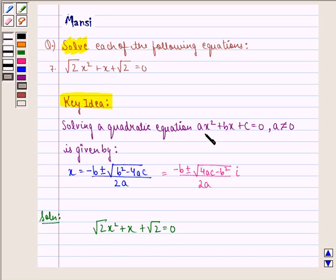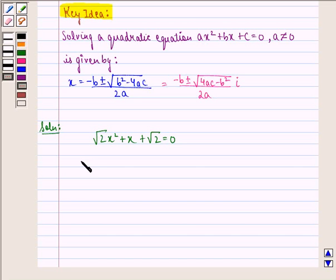If we compare this equation with ax² + bx + c = 0, we get a = √2, b = 1, and c = √2.